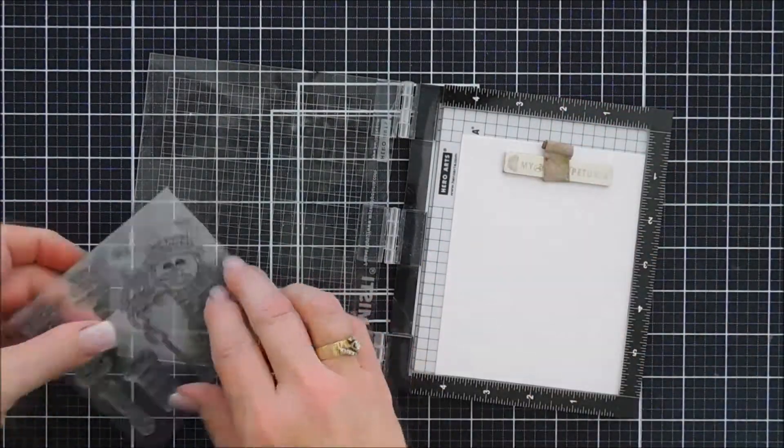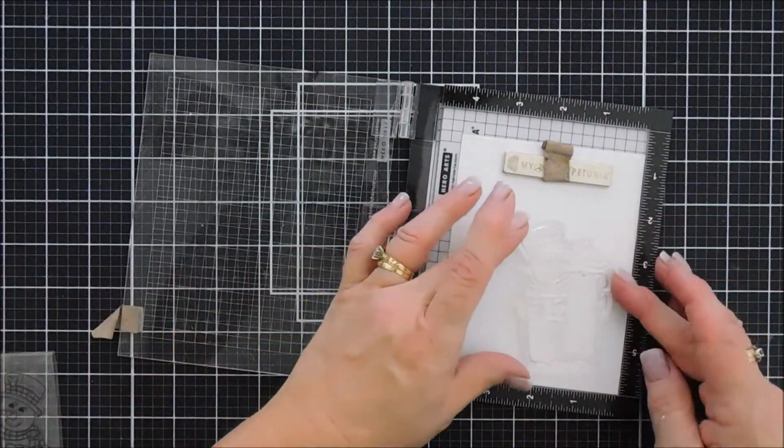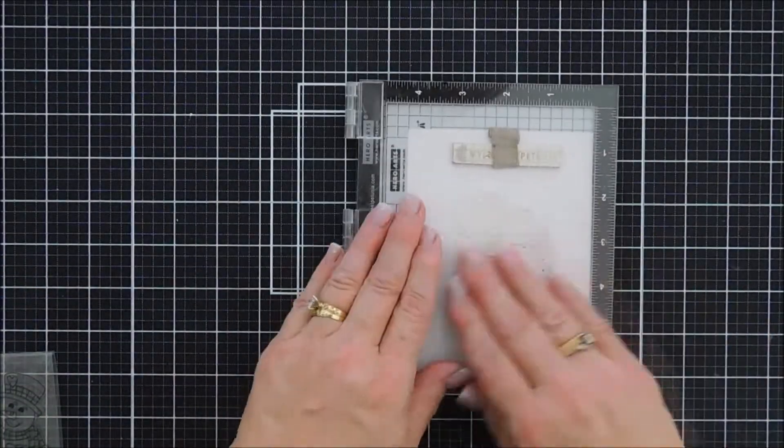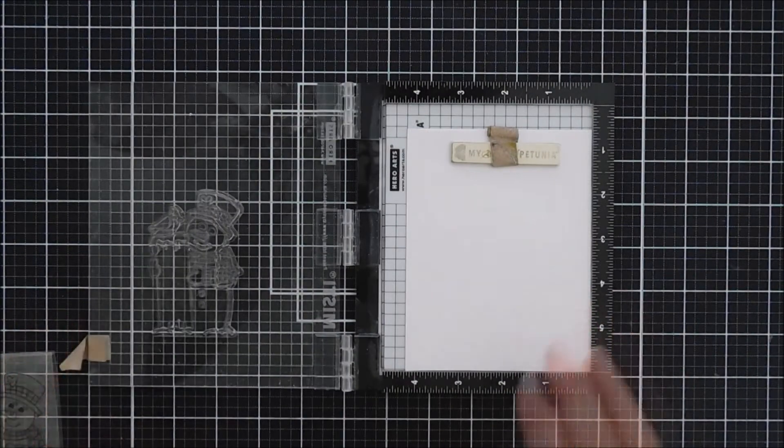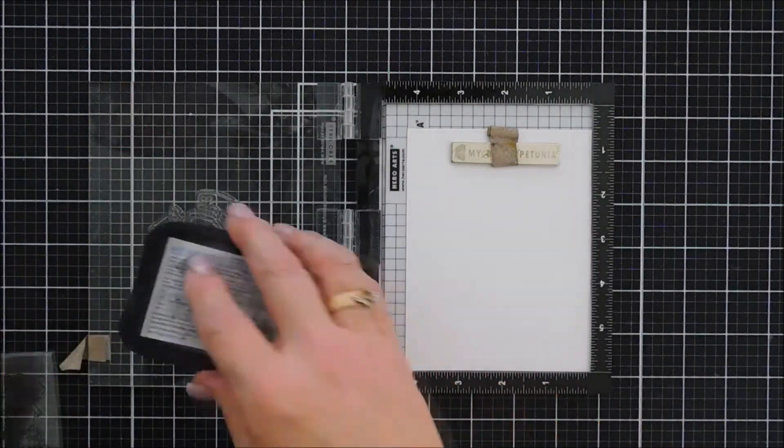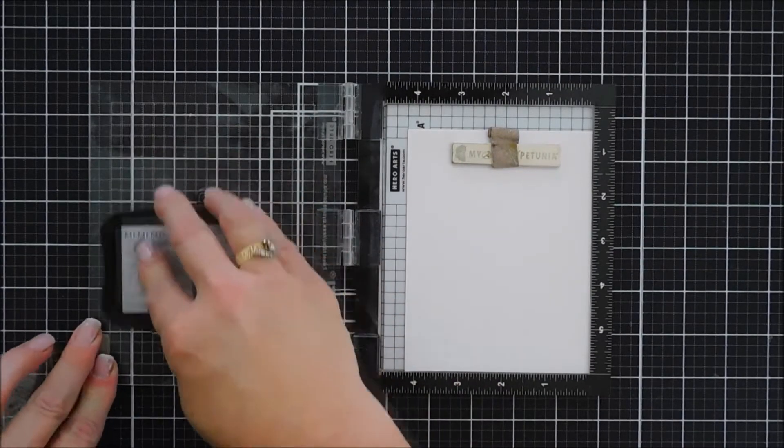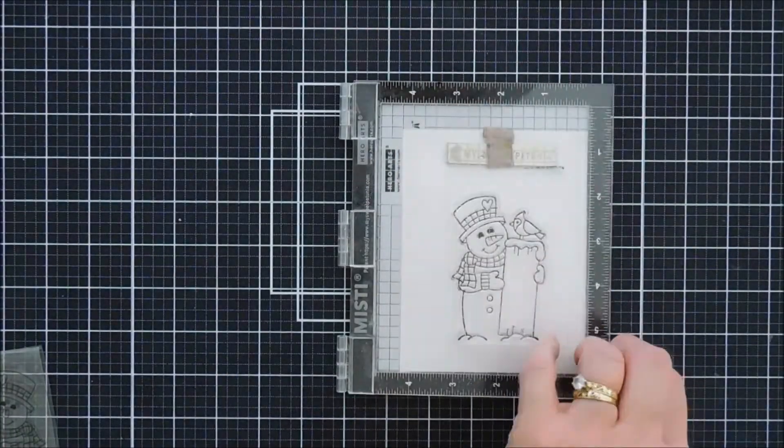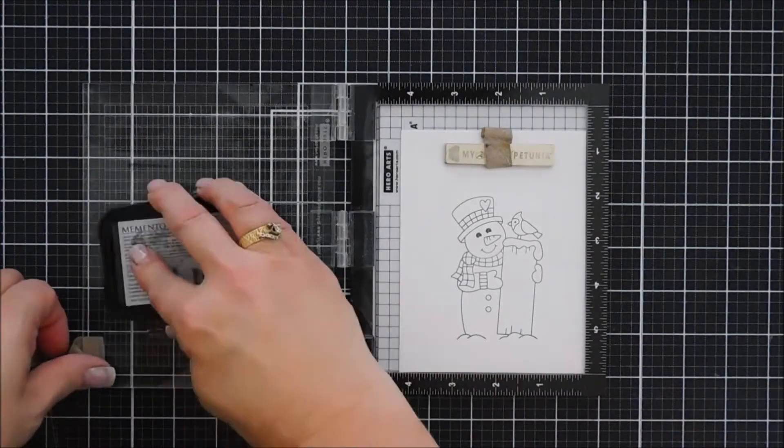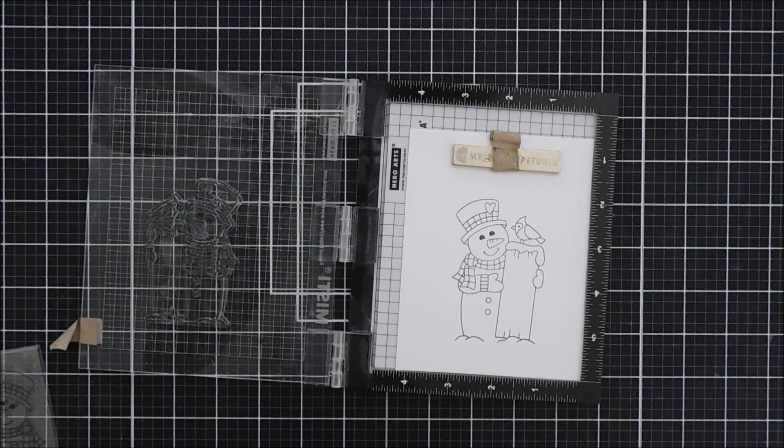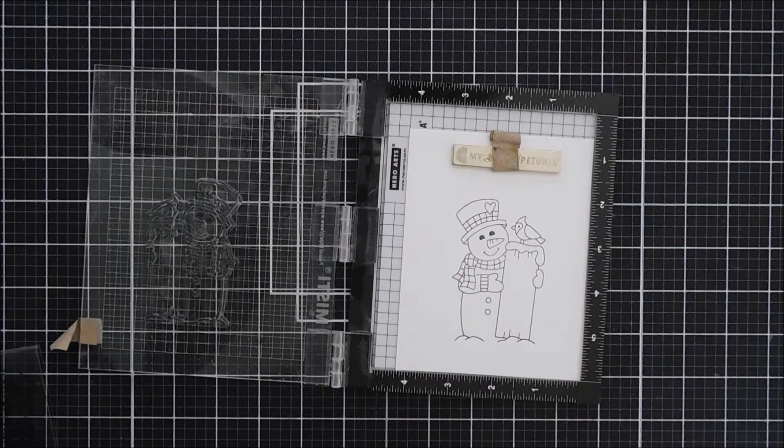We'll take the large image, pick it up with the lid of our Misti and then I'm going to be using my Memento Tuxedo Black ink to stamp it. I'm going to stamp a few times to get a nice crisp image and then I'm going to leave my stamp inside my Misti and then this way when I'm done coloring I can come back and re-stamp with my VersaFine onyx black ink to give it a more crisp color. But there's my image. I'm going to zoom in.